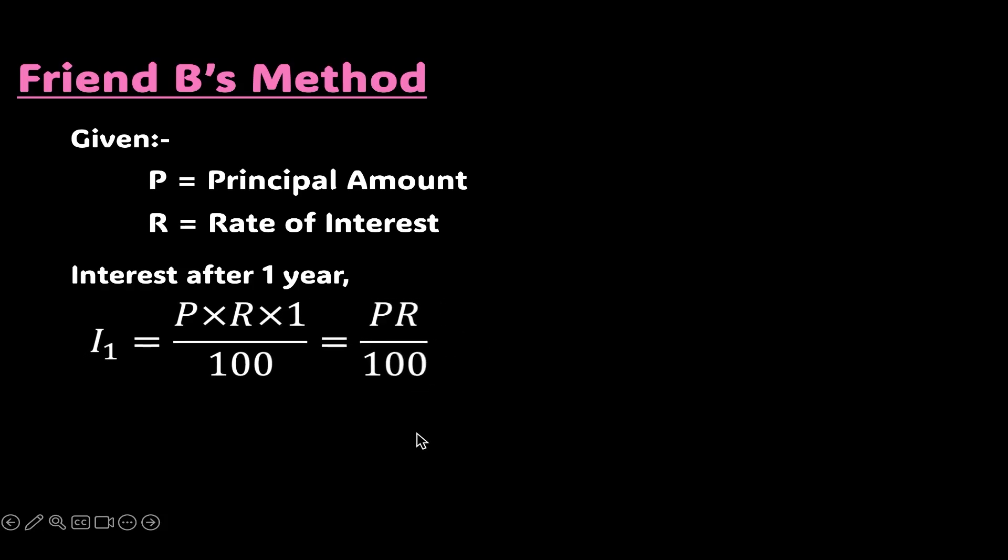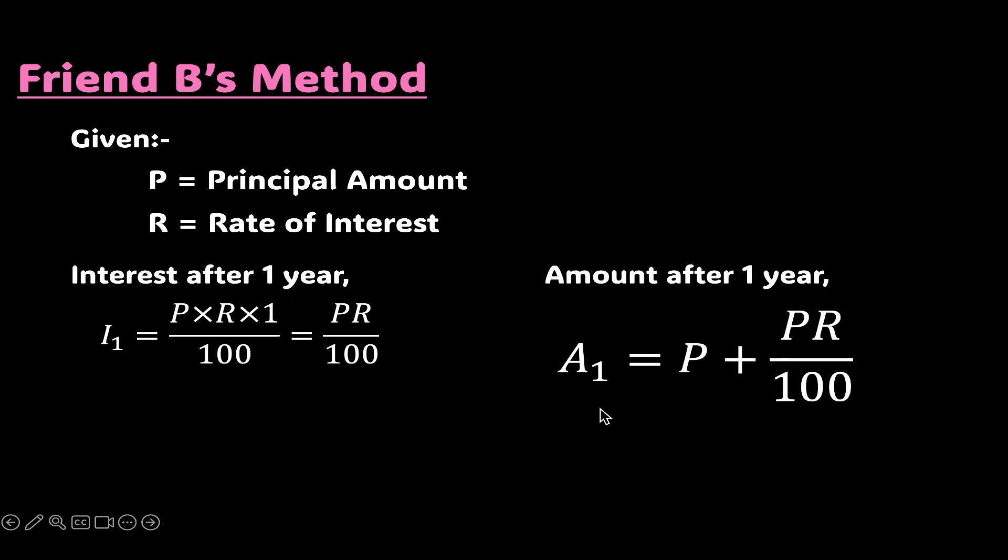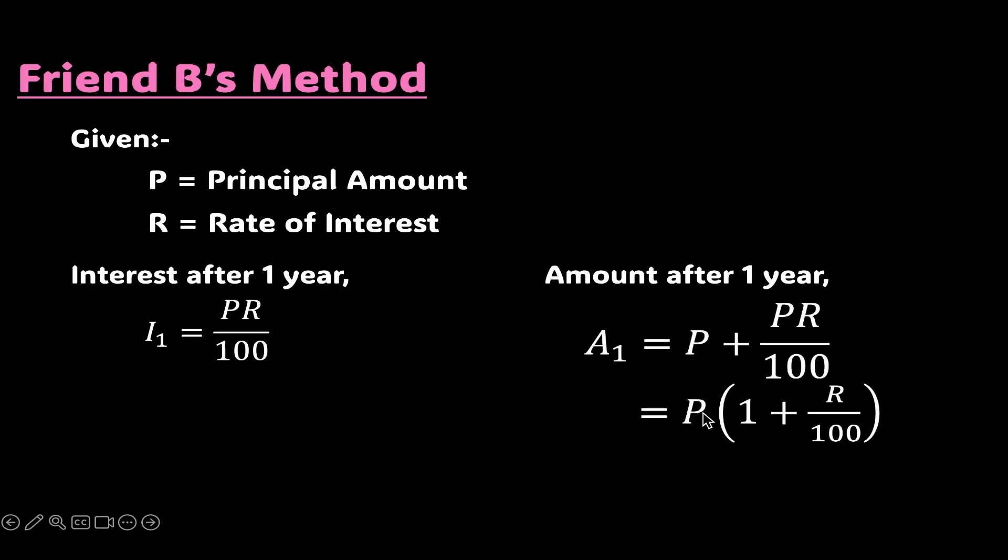Therefore, the amount after year one will be nothing but the original principal amount which is P plus the interest that we have generated which is I1 which is PR upon 100. Taking P common, we will get P times 1 plus R over 100.